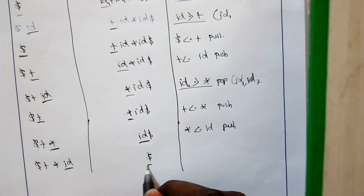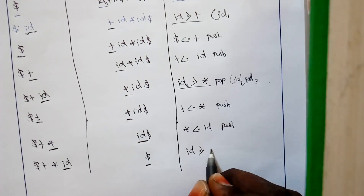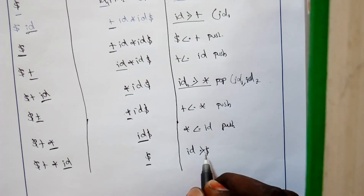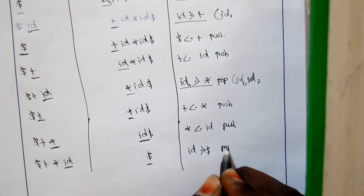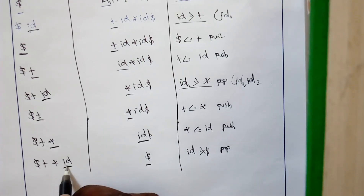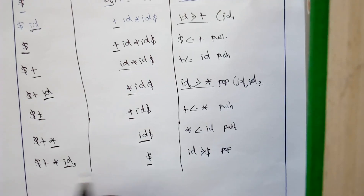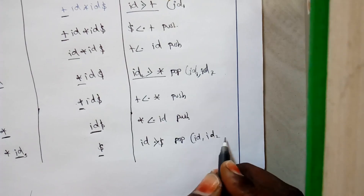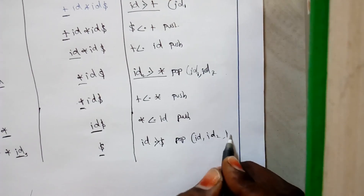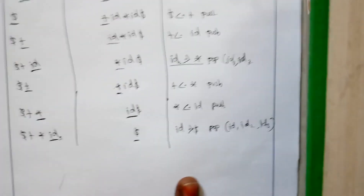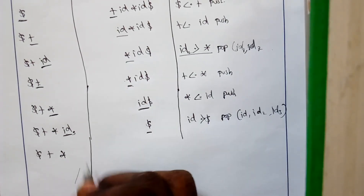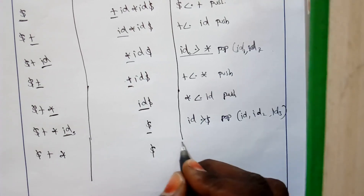When you compare id and dollar, id has a greater precedence over dollar. So we pop the topmost element, which is id — we call this id3. So id3 is popped out and added to the reduced list alongside id1 and id2. The remaining stack elements are dollar plus star, and the input now has only dollar.